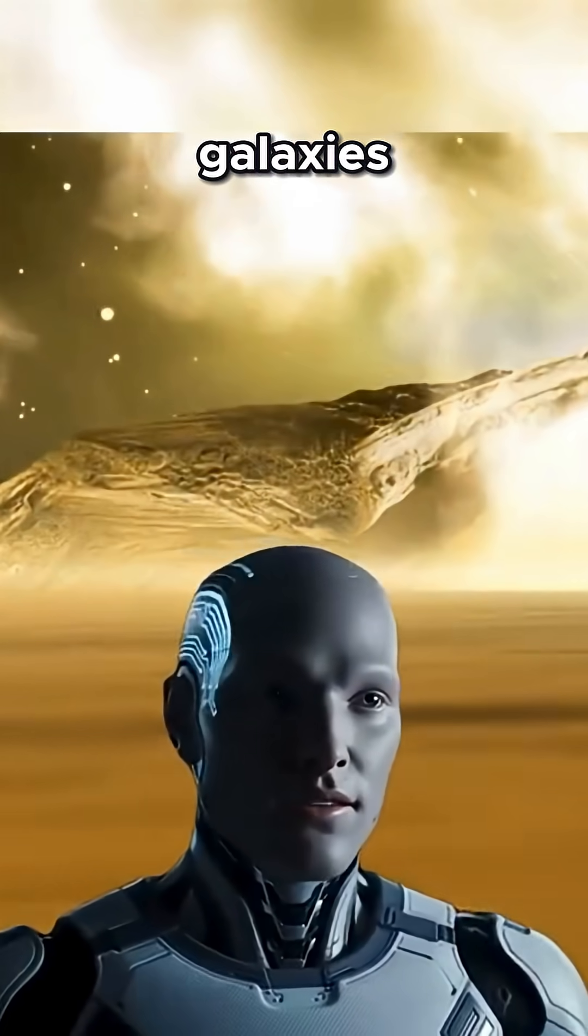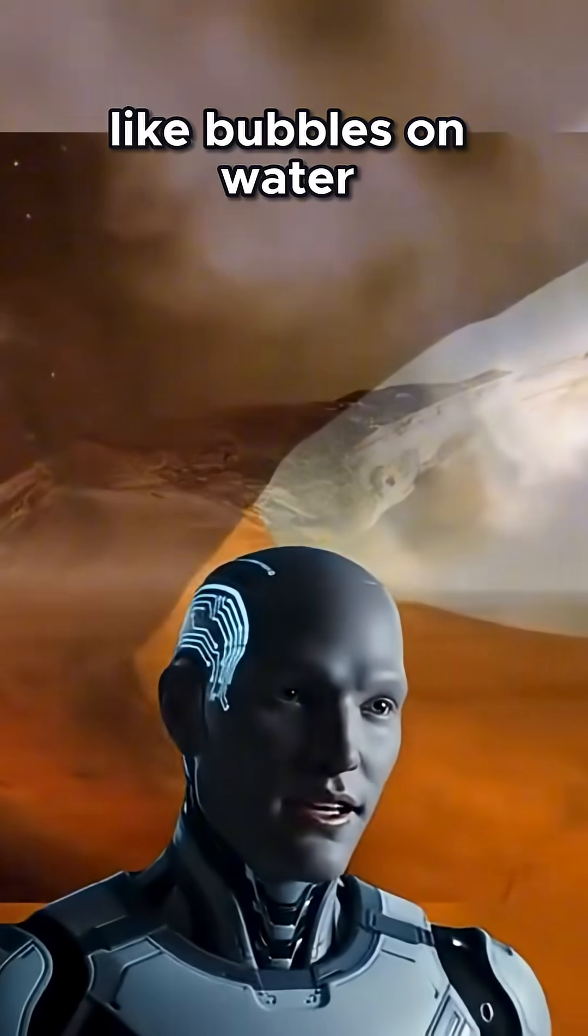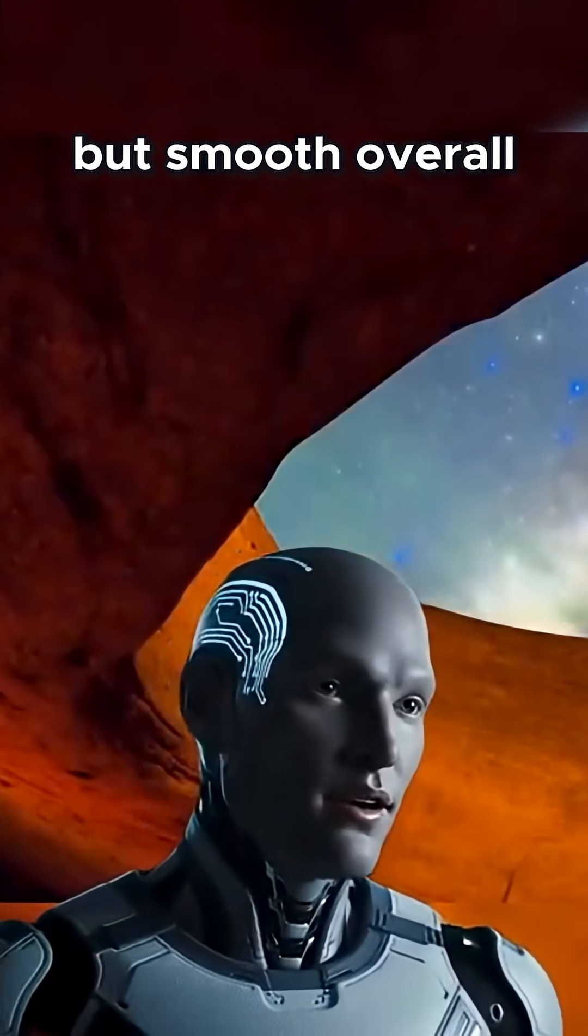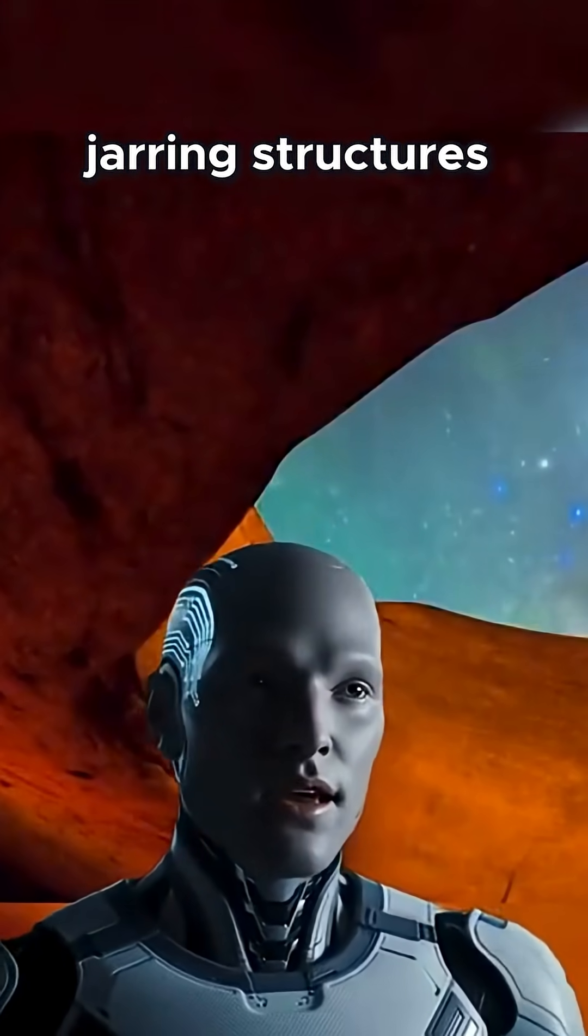In other words, galaxies should be distributed like bubbles on water, some clustered, some in voids, but smooth overall without massive, jarring structures.